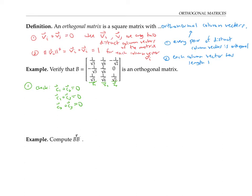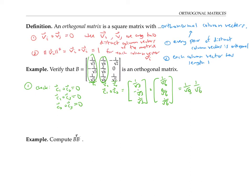For example, C1 dotted with C2 is this vector dotted with this vector. That's one over root three times one over root six, minus one over root three times two over root six, plus one over root three times one over root six, which adds up to one minus two plus one over root three times root six, which equals zero as required. I'll let you verify that the other two dot products are also zero.